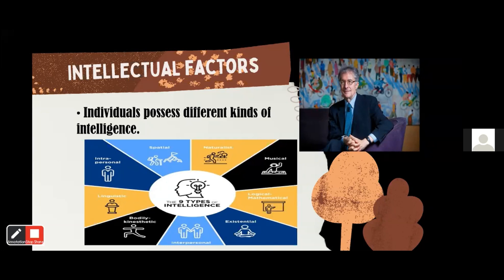For naturalistic intelligence, students love animals, plants, and nature, and love to understand the natural world. For musical intelligence, students excel in performing and composing musical pieces. There is also existential intelligence, where students have the ability to ponder questions about life, death, and ultimate realities. And for logical intelligence, students excel in mathematics and logical thinking.